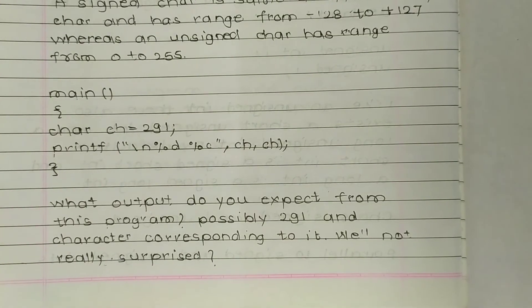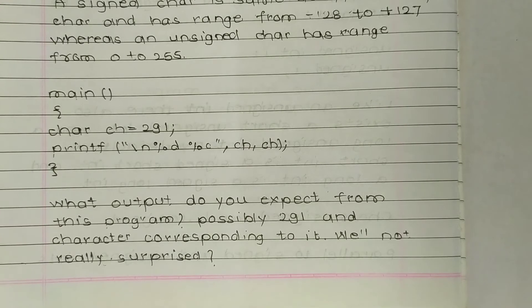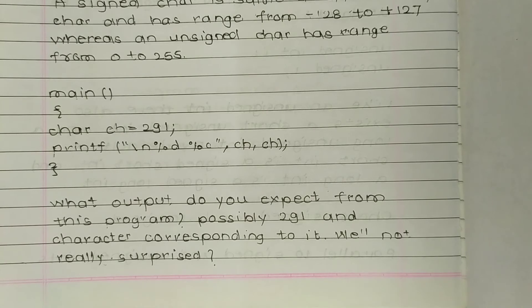So this is a basic program. Main: char ch equals 291. Now printf on the next line: %d %c. %d is for integer and %c is for character. So first ch as integer, second as character.